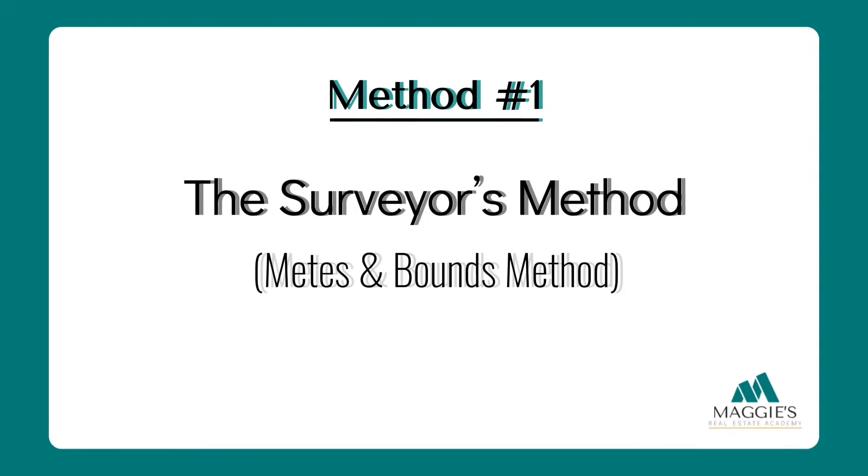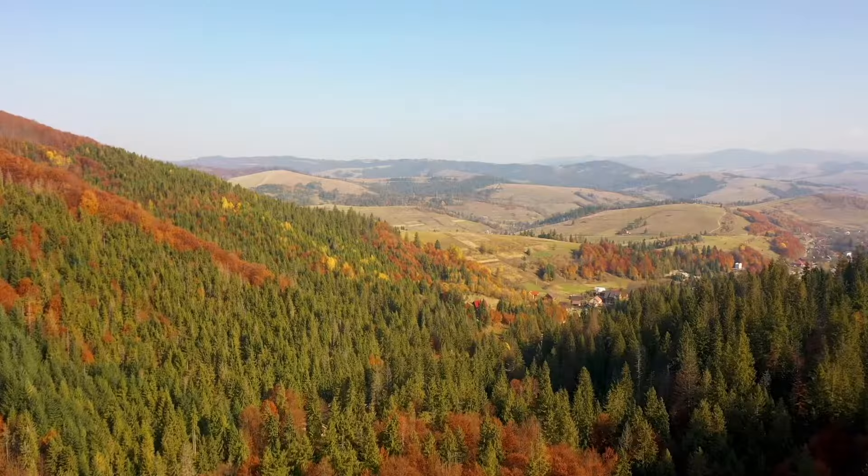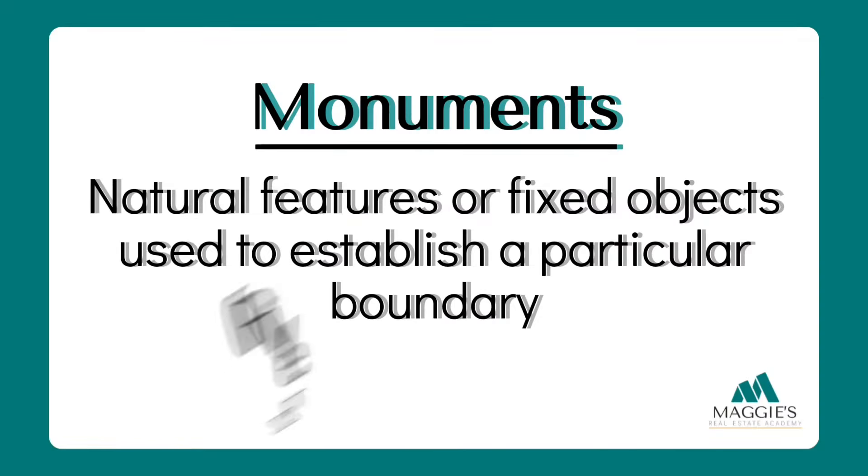Let's kick things off with method number one: the surveyor's method, also known as metes and bounds — the oldest yet most accurate land surveying method, used to describe a property's boundaries going back to colonial times. Think of it like the OG GPS. In the metes and bounds method, surveyors use distances and directions, often referring to natural features or monuments like rivers, rocks, or trees, to create a detailed description of the land. They started at a designated point called the point of beginning and worked their way around the property.